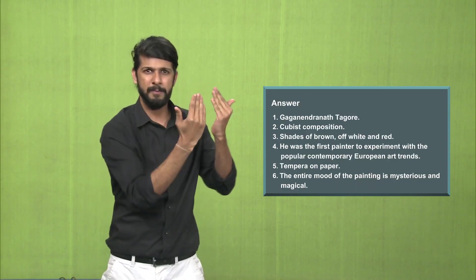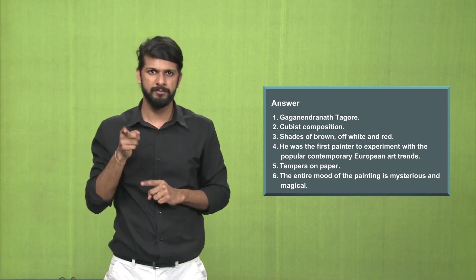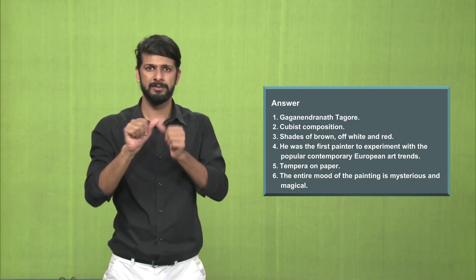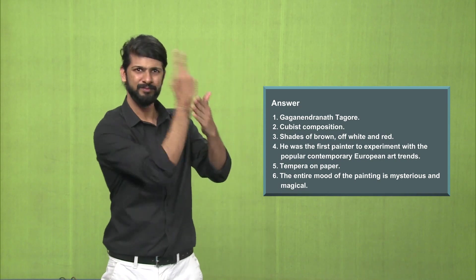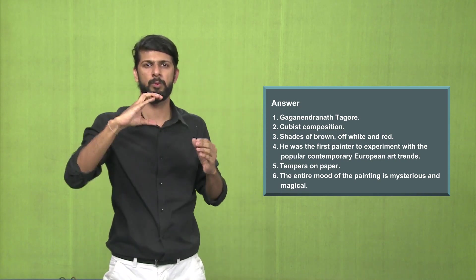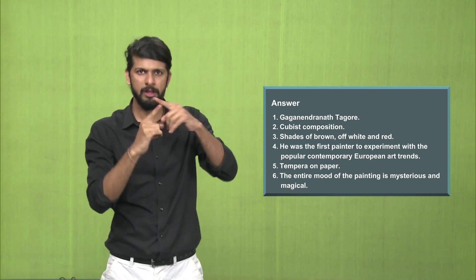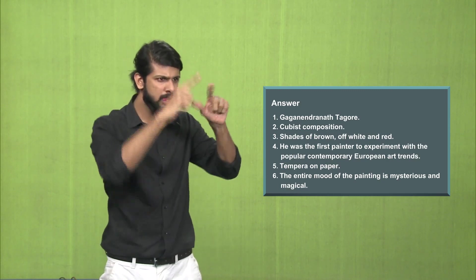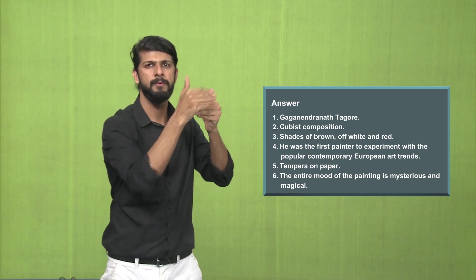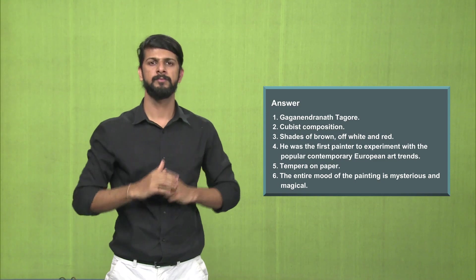Answers, answer number 1, the magician is painted by Gagendranath Tagore. Answer number 2, this composition is called a cubist composition where geometric shapes and artwork looks like they are made out of cubes.